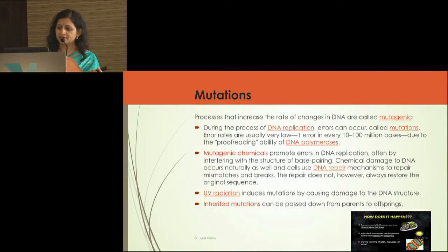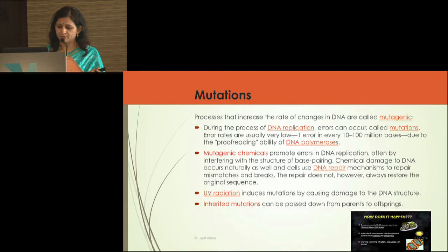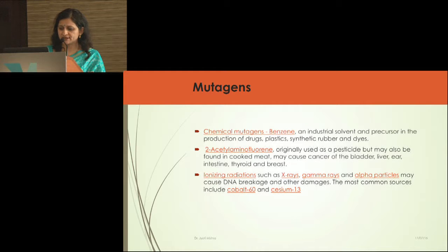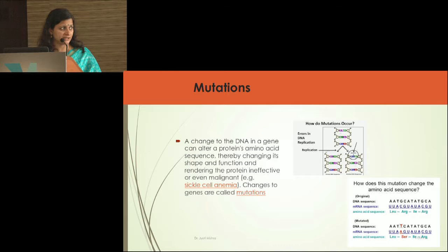Coming to mutations: processes that increase the rate of changes in DNA are called mutations. Normally, cells are dividing and DNA replication is happening. Errors occur at a rate of about one error in every ten million bases. Most of the time DNA can repair itself, but mutagenic chemicals hamper the repair process. This causes DNA to change and the resultant protein becomes different, with a different function. UV radiations and inherited mutations can also be passed on to offspring. If a base changes — for example, from C and G to T and A — the protein changes from arginine to serine, making the resultant function totally different.